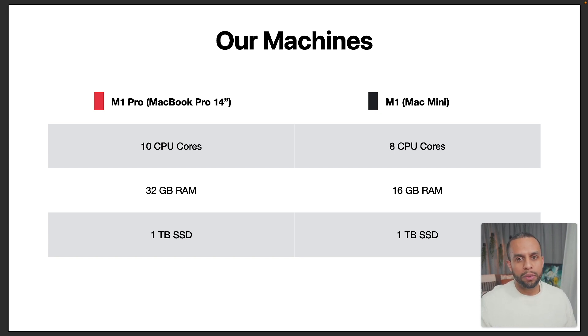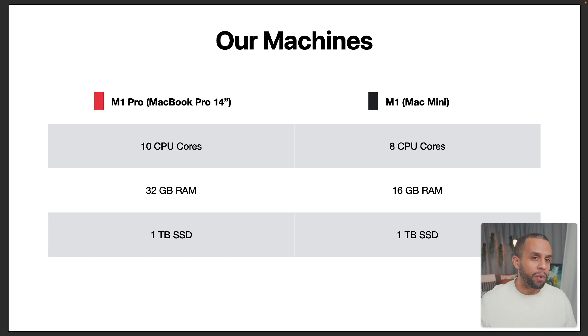Let's first take a look at our machines head to head. My M1 Pro is a 10-core CPU with 32 gigs of RAM and 1TB SSD. The M1 Mini is an 8-core CPU, 16 gigs of RAM, and also 1TB. The thing to keep in mind is that there's a difference in how many performance cores we have here, but I have a video if you want to check that out for a more detailed breakdown.